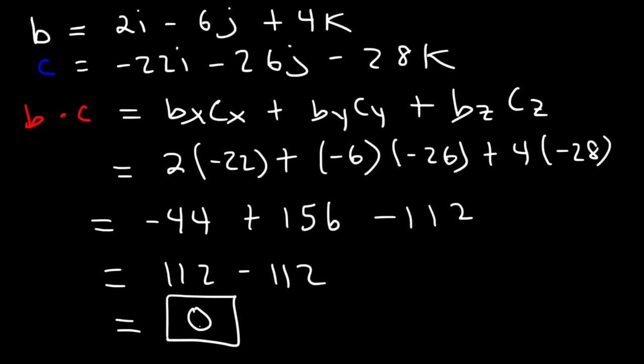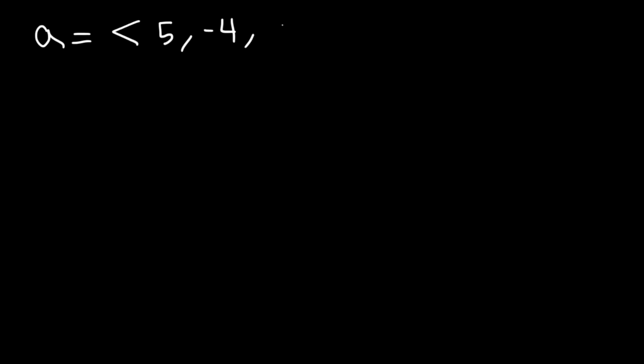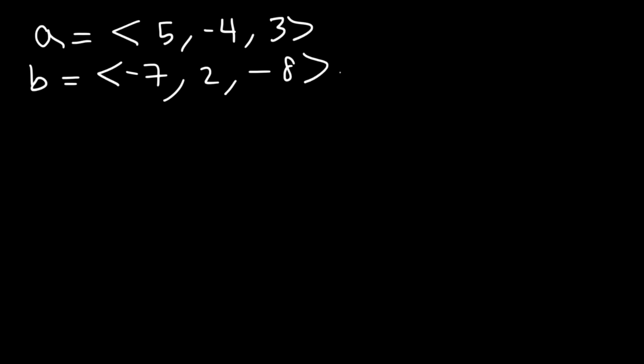The answer you get — if you find the dot product of vector C with vector A or vector B — both should equal zero, because the new vector is orthogonal or perpendicular to the two vectors that created it. Now let's work on another example. Let's say vector A has components 5, negative 4, and 3, and vector B is negative 7, 2, negative 8. Find the cross product of vectors A and B.